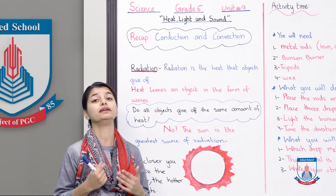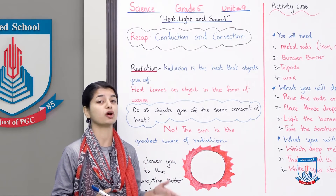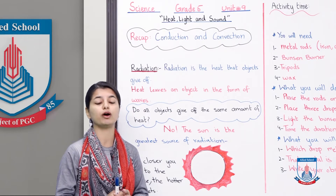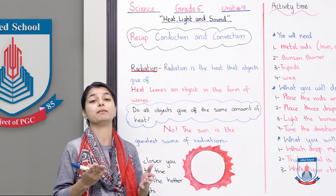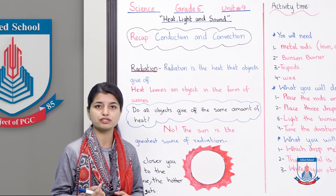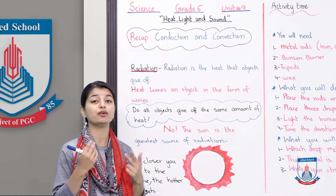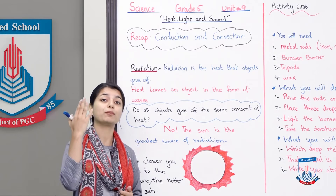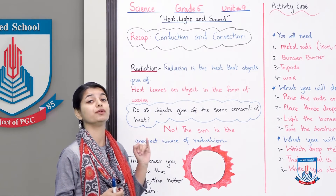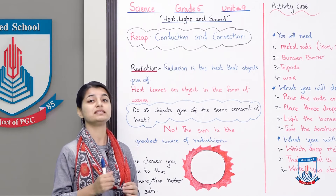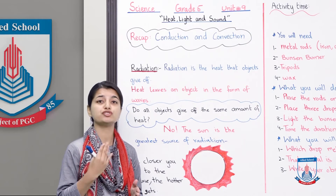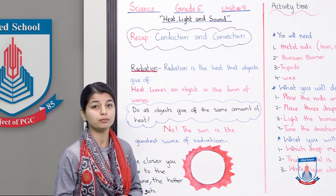For conduction or convection you need either a solid, or liquids and gases. But the heat from the sun that reaches us — the warmth you experience in summers — how does it reach us? Between us and the sun there is no solid, no liquid, no gas. So that heat reaches you through radiation, and that is why the sun is the greatest source of radiation. Similarly, fire, a heater at home, or a fireplace — the heat from those also reaches you through radiation.